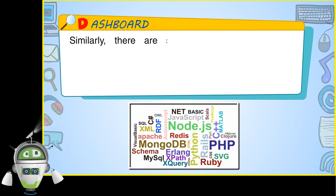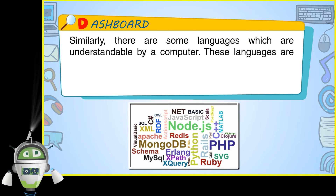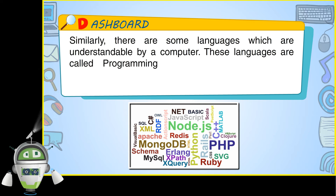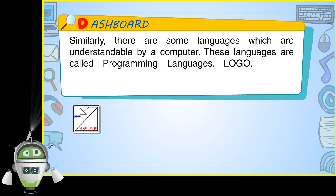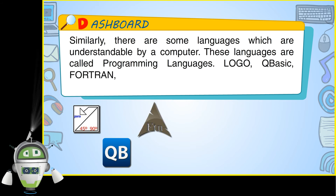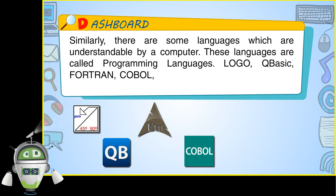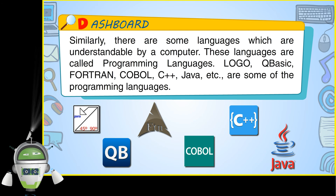Similarly, there are some languages which are understandable by a computer. These languages are called Programming Languages. Logo, QBasic, Fortran, COBOL, C++, Java, etc. are some of the programming languages.